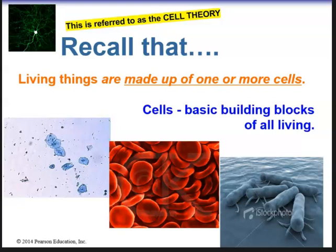In the late 1830s, we had a botanist and a zoologist — Matthias Schleiden and Theodor Schwann — who were studying tissues and proposed what's known as the unified cell theory. Living things are made up of one or more cells. These two scientists made three postulates to the unified cell theory.